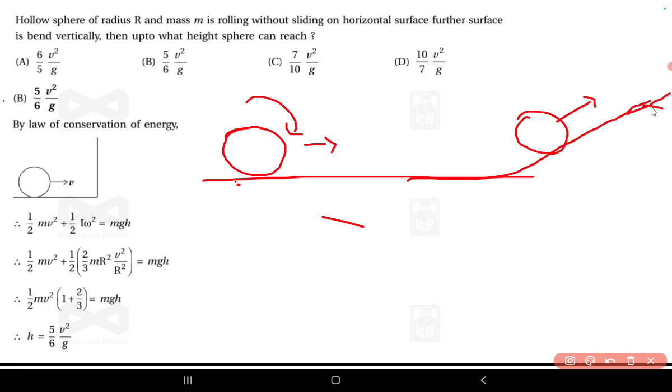When it is rolling it has two energies: one is rotational kinetic energy and one is translational kinetic energy. So translational is ½mv², rotational is ½Iω². This equals mgh. So ½mv² plus ½ times the moment of inertia of the hollow sphere which is ⅔mr².